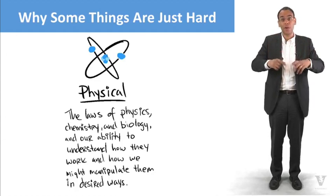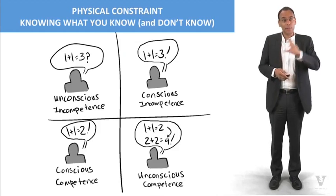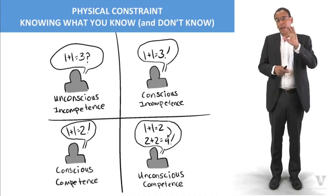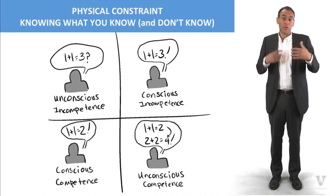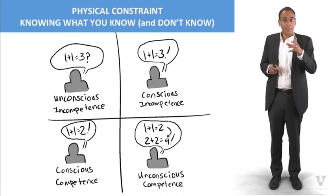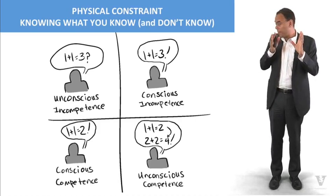But the problem that we have really is one of knowing whether we know or not. Let me put this into a two-by-two here to talk about these four perspectives on knowledge and our ability to know something. We're going to talk first about unconscious incompetence.